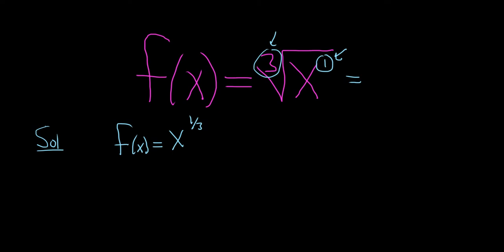Okay, so now we can use the power rule for derivatives. So using the power rule, f prime of x—the symbol is prime, it means we're taking the derivative—is equal to... So you take the 1 third, and you put it in the front.